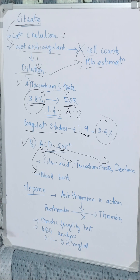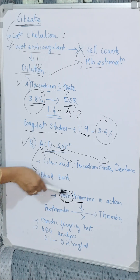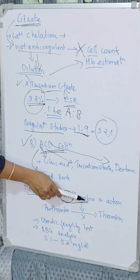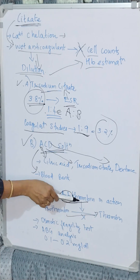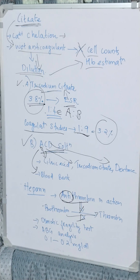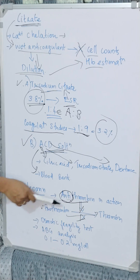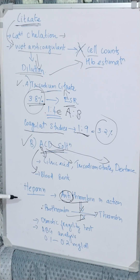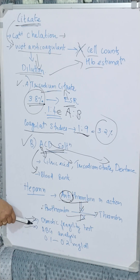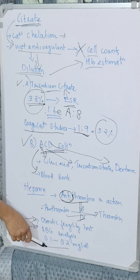Heparin is a natural anticoagulant that is antithrombin in action, meaning it inhibits the conversion of prothrombin to thrombin, keeping blood in a fluid state. It is used for osmotic fragility test and arterial blood gas analysis. The concentration used is very low — 0.1 to 0.2 milligrams per ml.